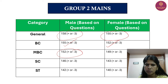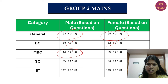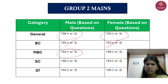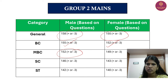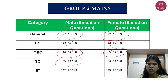General Tamil is very tough, General English is very easy, and GS is very tough. Looking at the current year's aptitude, we are saying we have a range of 60 to 62 or 65. MBC is 149 plus or minus 3. LC is 146 plus or minus 3. Female is 143 plus or minus 3. ST is 142 plus or minus 3, and female is 140 plus or minus 3.